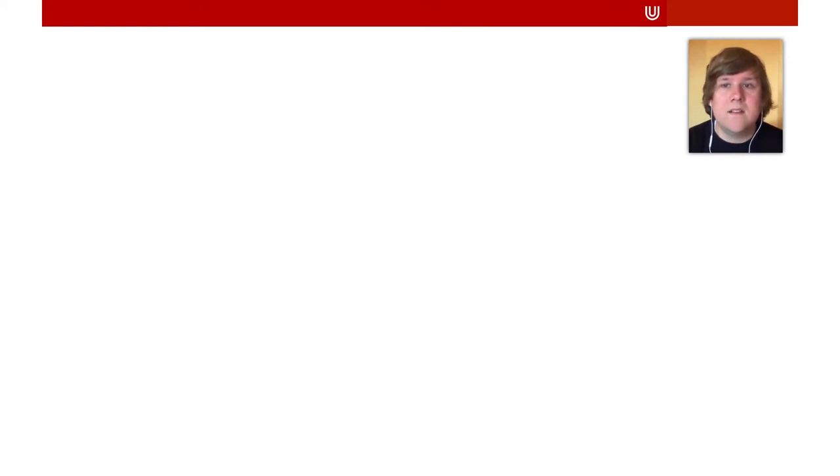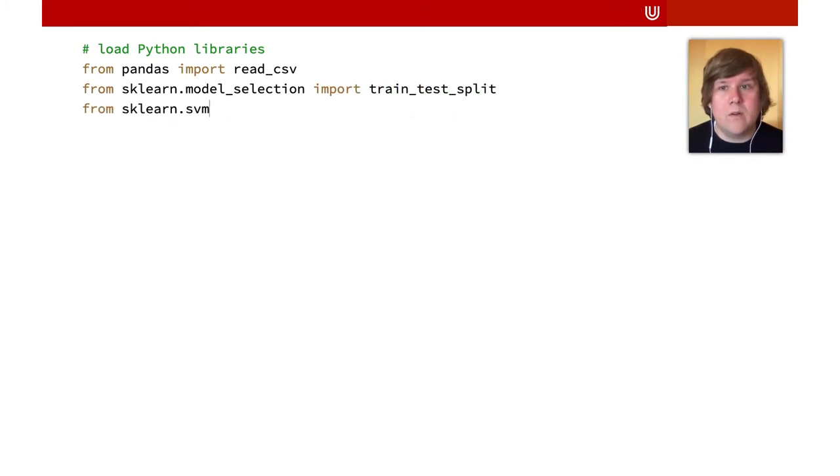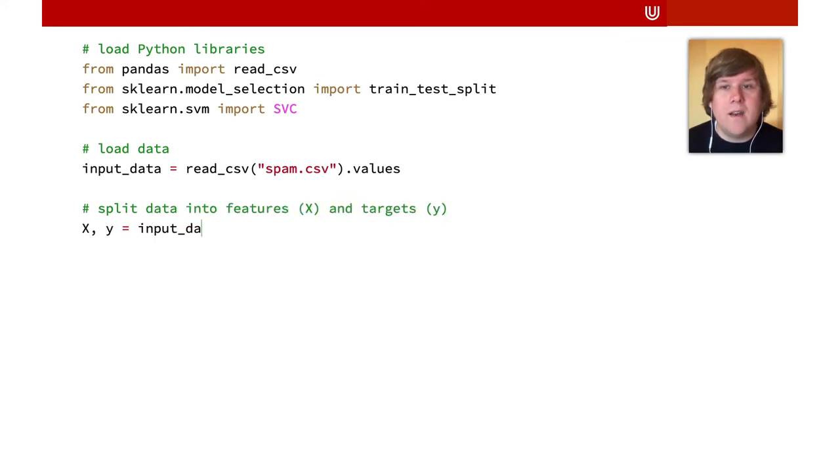To understand this, let us first consider how a machine learning system is trained. What you see here is the source code of a machine learning system that detects spam. This is working Python code. In the code, we load and split the data from a file called spam.csv and train and evaluate a support vector classifier.